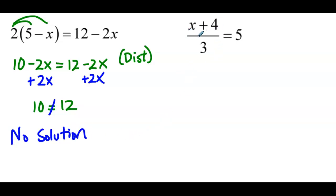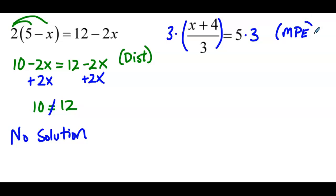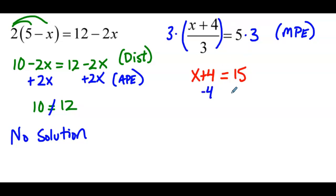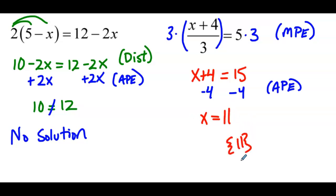Now we have (x plus 4) over 3 equals 5. I'll start by multiplying both sides of this equation by 3 — that's by the MPE — giving us x plus 4 equals 15. Then subtract 4 from both sides by the addition property of equality, and we wind up with x equals 11. So our solution set is the value 11. We can check: 11 plus 4 is 15, divide by 3 is 5 — a true equation.